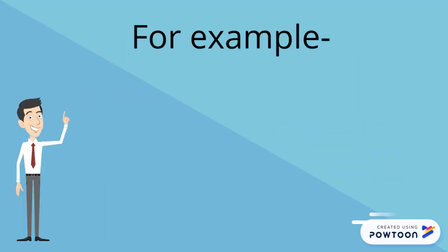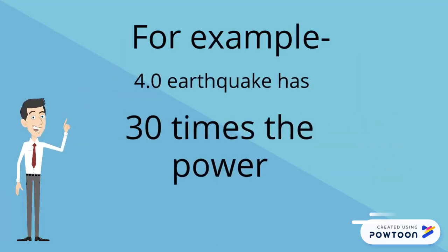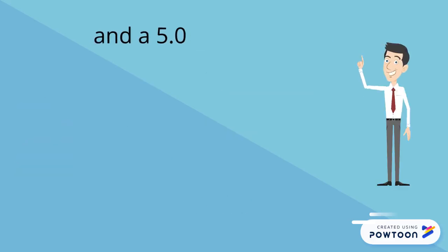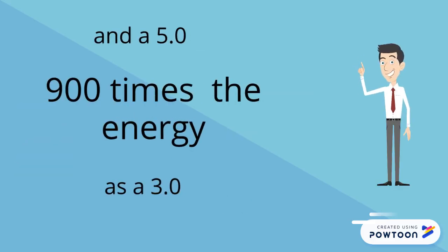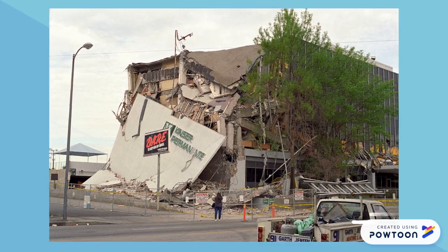For example, a 4.0 earthquake has 30 times the power of a 3.0, and a 5.0 has 900 times the energy as a 3.0. Now, minor earthquakes occur every day and hour, while major earthquakes occur once a year on average.